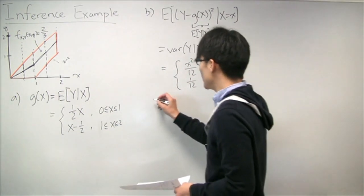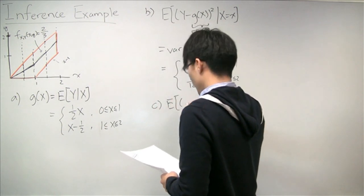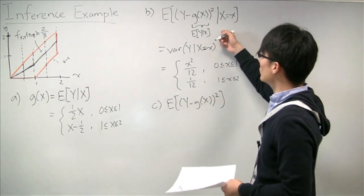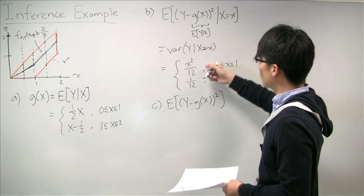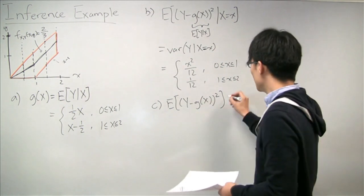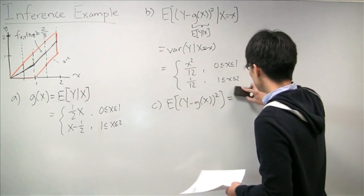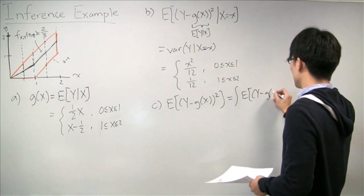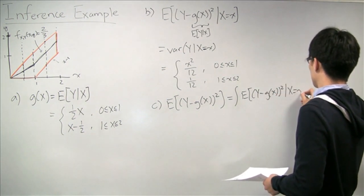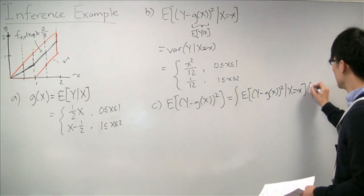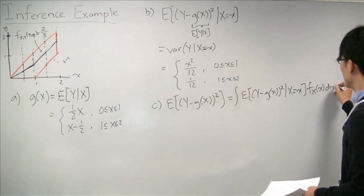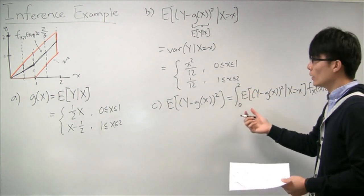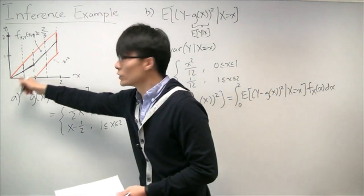Part C asks us to find the mean squared error, which is the expectation of (Y minus g(X)) squared. This looks very similar to the conditional mean squared error. Given what we know from Part B, we can calculate this by applying total expectation: the MSE equals the integral of the conditional mean squared error times the PDF of X, integrated over X from 0 to 2, since that's the only range where X applies.